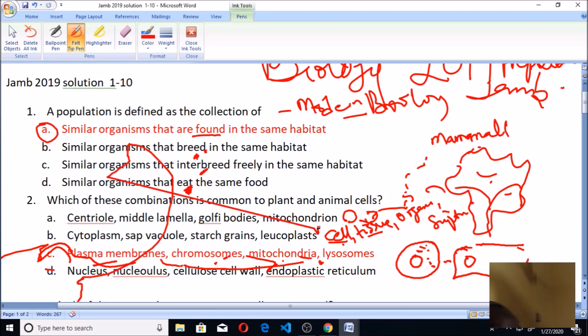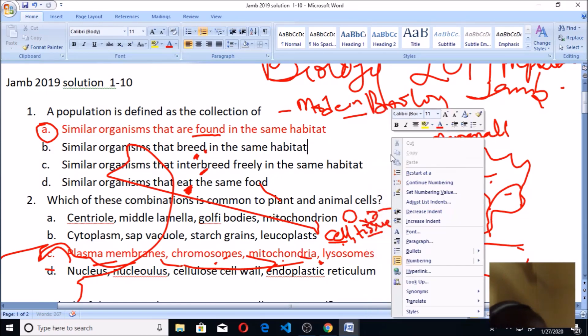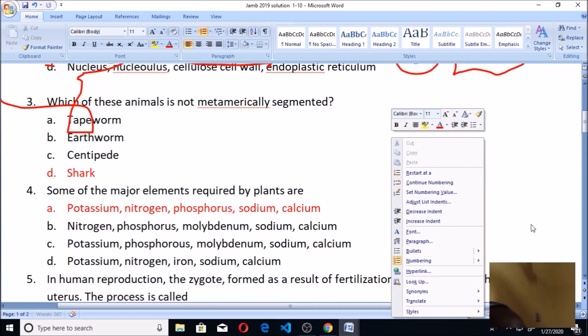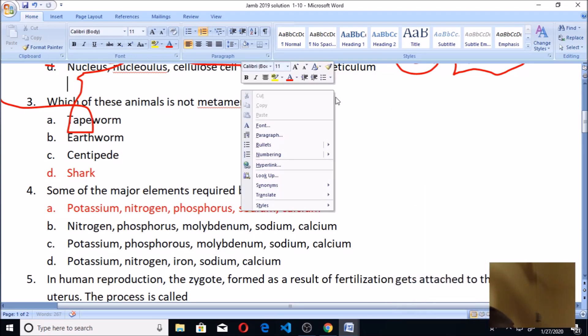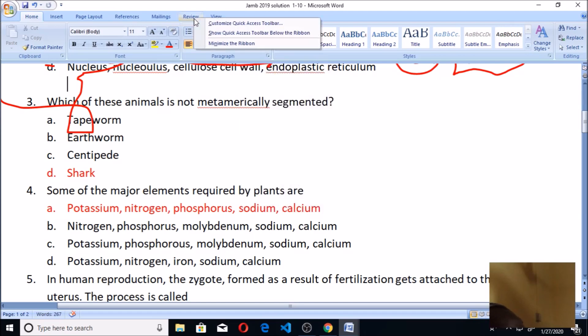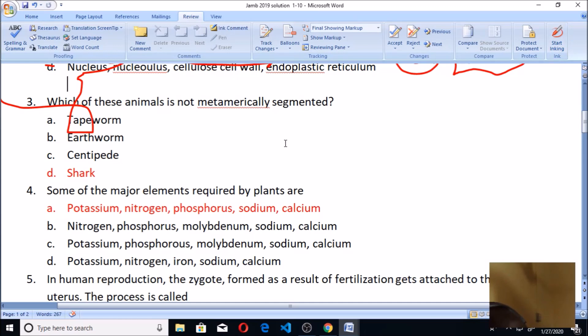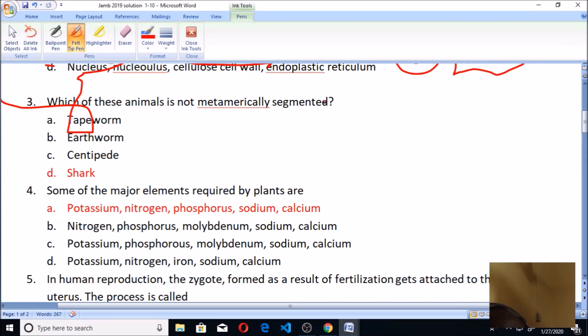Let's continue and check out other questions. Question number three: which of these animals is not metamerically segmented? In segmentation of animals we have majorly animals like tapeworm, earthworm, and centipede. You know them by their shapes, that's what we call segmentation. But you look at shark, shark has a very different shape. If you know what shark is, it's a kind of fish, very big. They are not having this type of metamerical segmentation.